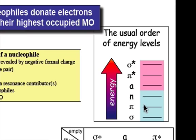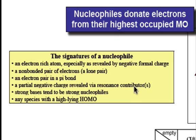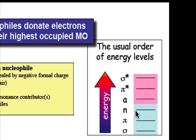Another possibility directly beneath that is going to be a pi bond. So an electron pair in a pi bond will also be very energetically favorable. You can also look for resonance contributors and show a partial negative charge as revealed. What we also find out is that strong bases also tend to be very strong nucleophiles. And any species with a high-lying HOMO, as we see from our N or our pi, will tend to be a nucleophile.